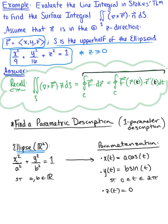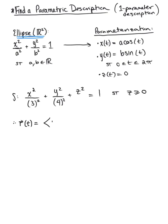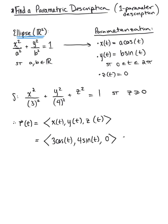We can use this to parametrize our ellipsoid. We're given the surface and can rewrite it as x²/3² + y²/4² + z²/1 = 1, with z ≥ 0. Therefore, the parametric description of the ellipsoid has components x(t) = 3cos(t), y(t) = 4sin(t), z(t) = 0, with t ∈ [0, 2π].